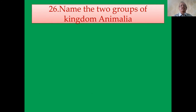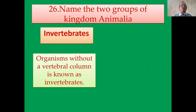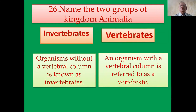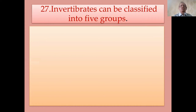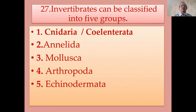Name the two groups of kingdom Animalia. First is invertebrates — organisms without a vertebral column. Second is vertebrates — organisms with a vertebral column. Invertebrates can be classified into five groups: Phylum Cnidaria, Phylum Annelida, Phylum Mollusca, Phylum Arthropoda, and Phylum Echinodermata.